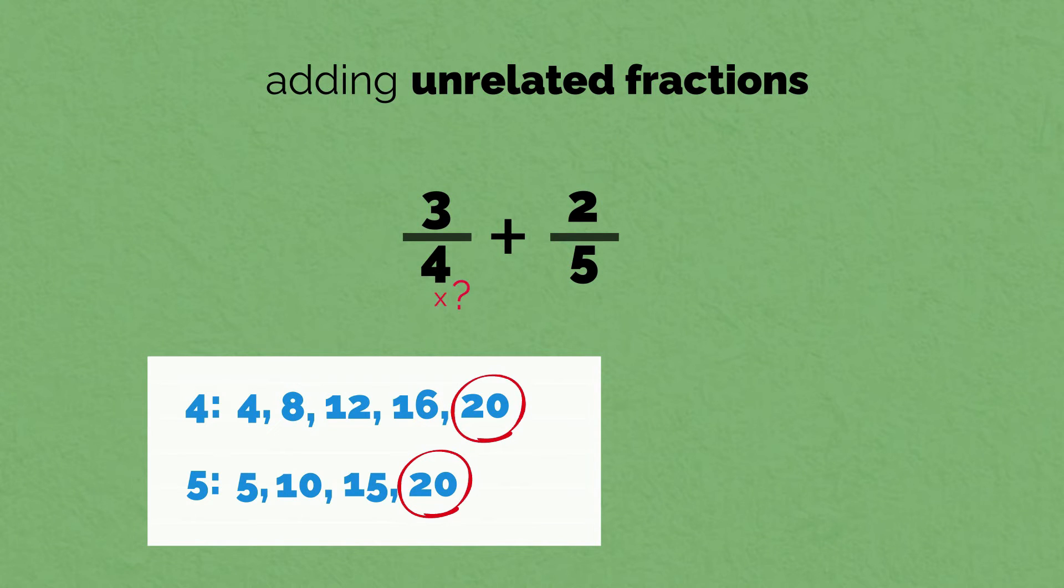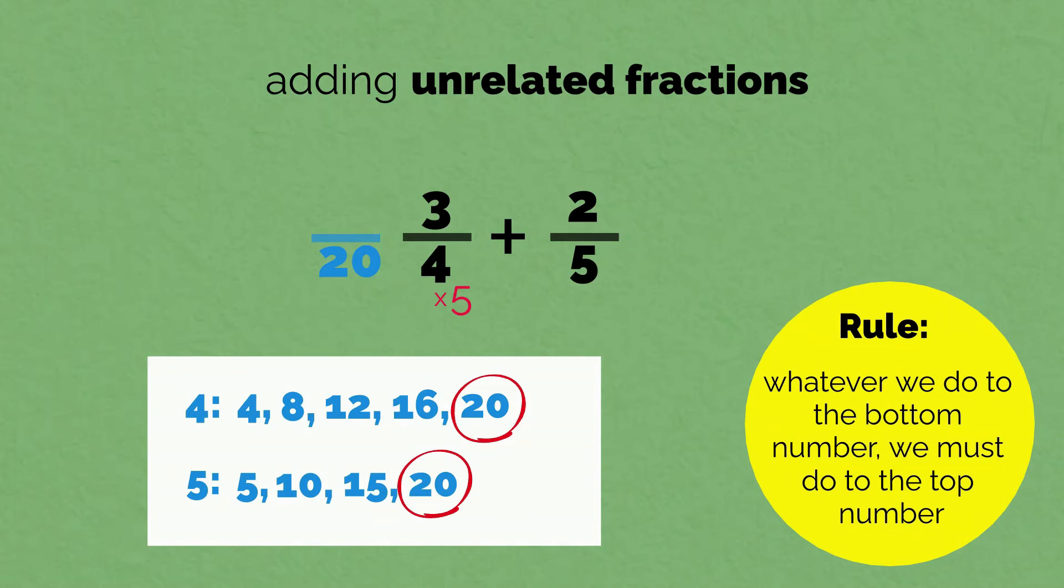What do we multiply 4 by to get to 20? 5. Now, whatever we do to the bottom number, we must do to the top. 3 times 5 equals 15. 3 quarters is equal to 15 20ths.